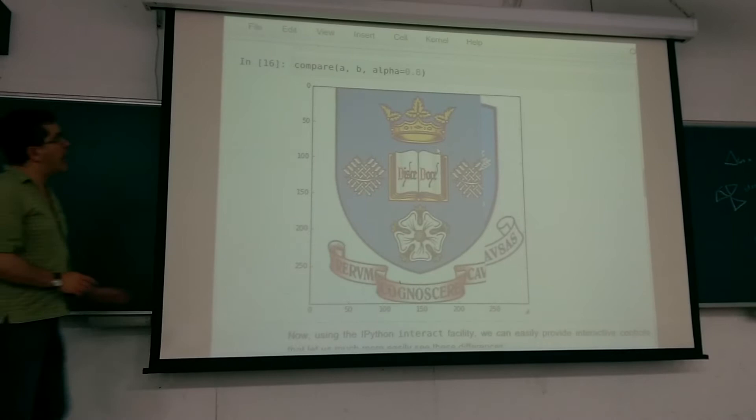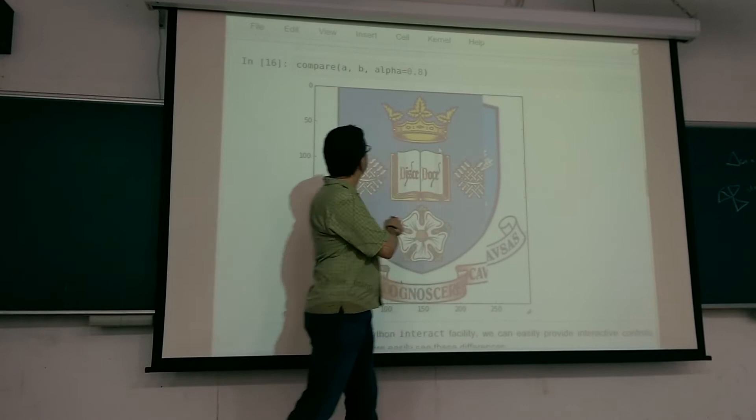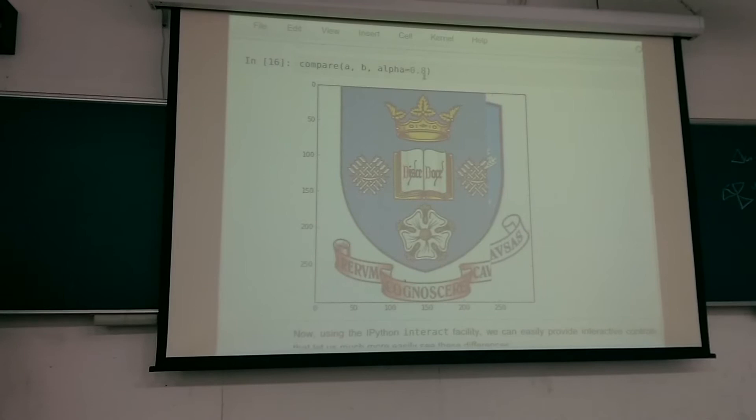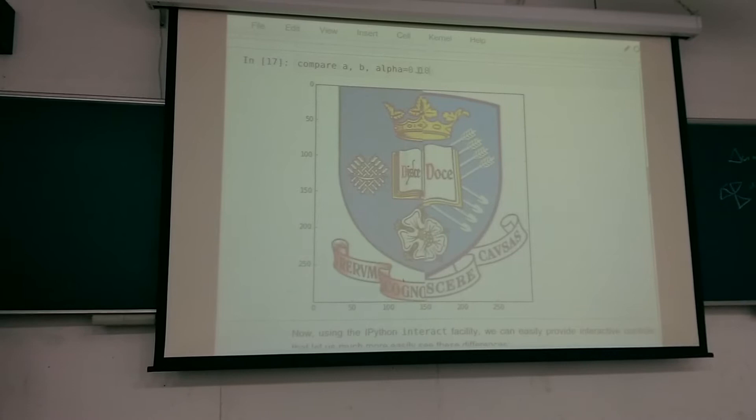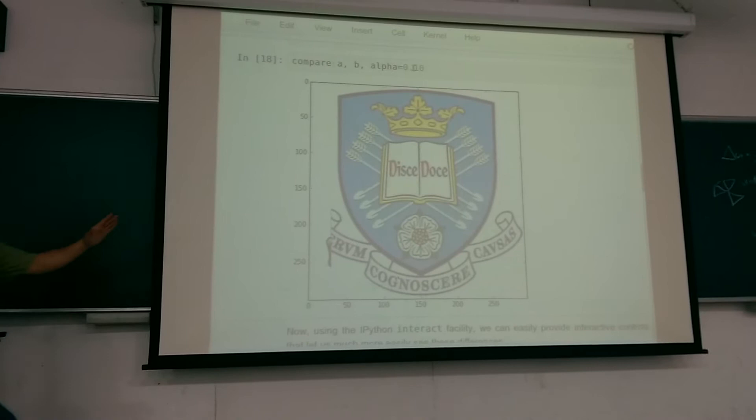Here's an example: showing 80% of the old image and 20% of the new one. If I want to change this and say 'show me half and half,' I have to retype and rerun. If I want to see only 10% of the first and 90% of the other I can, but it's kind of annoying to have to type a number every time I want to change the view.